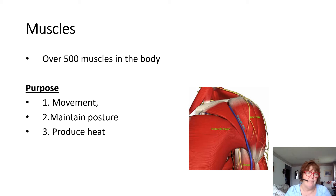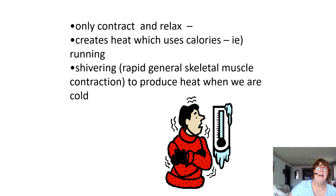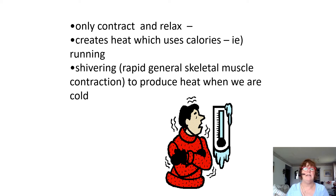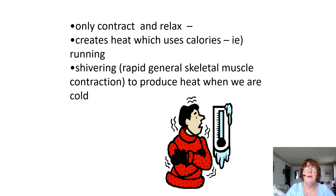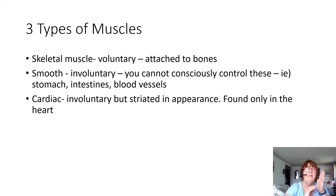We have over 500 muscles in the body. They give us movement, maintain posture, and produce heat. They only contract and relax. When we create heat it uses calories — running or shivering, which is a rapid general skeletal muscle contraction. When we're cold we shiver and you can't stop it; it's to produce heat. When you look at a raw chicken bone or a roast, you're going to actually see skeletal muscle attached to bones — it very much looks like cells or strips.